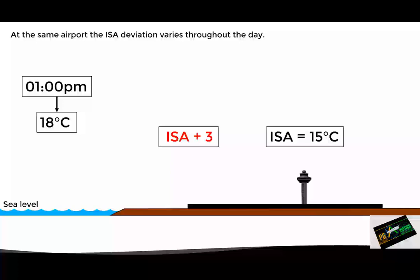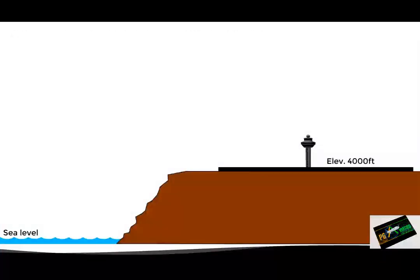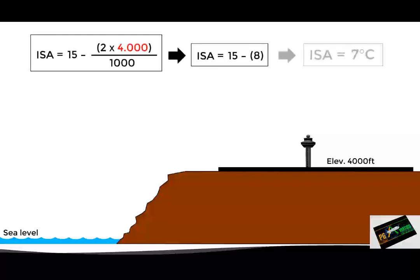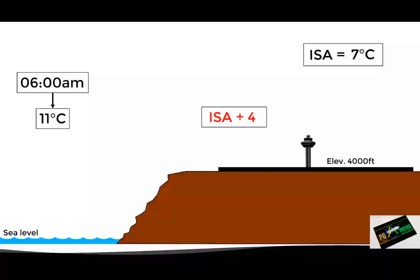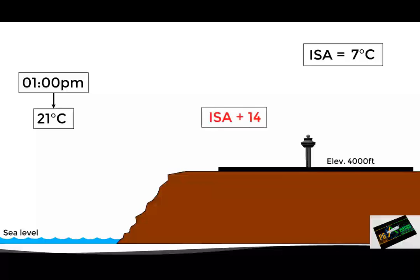This was an easy example since we already know that the standard temperature at sea level is 15 degrees Celsius. Now let's look at an example with a different elevation, say 4000 feet. In order to determine the standard temperature at that airport, we need to first know the standard temperature at 4000 feet. Using the formula we saw previously, we replace the altitude with 4000 and find that the standard temperature at that level is 7 degrees Celsius. Now, let's suppose that the actual temperature at the airport at 6 am is 11 degrees — the deviation would be plus 4 degrees. As the day progresses the temperature increases. At 1 pm the temperature recorded is 21 degrees — now the ISA deviation would be plus 14 degrees.